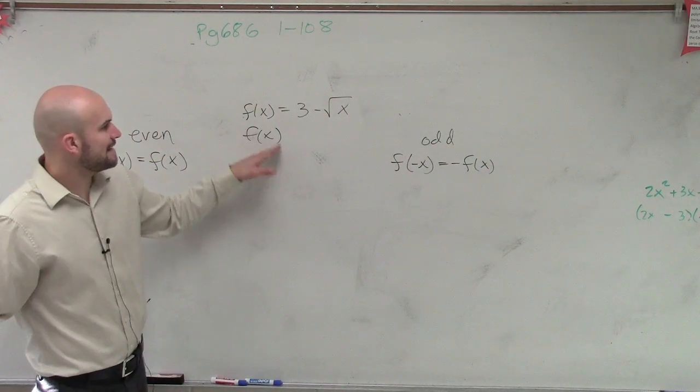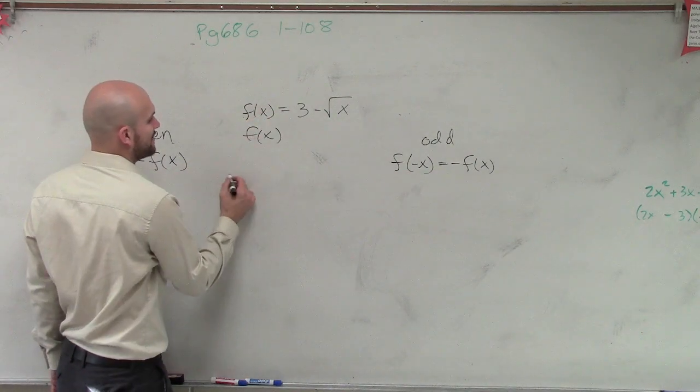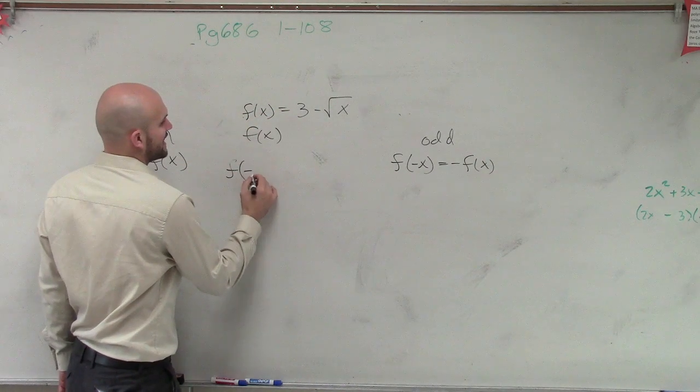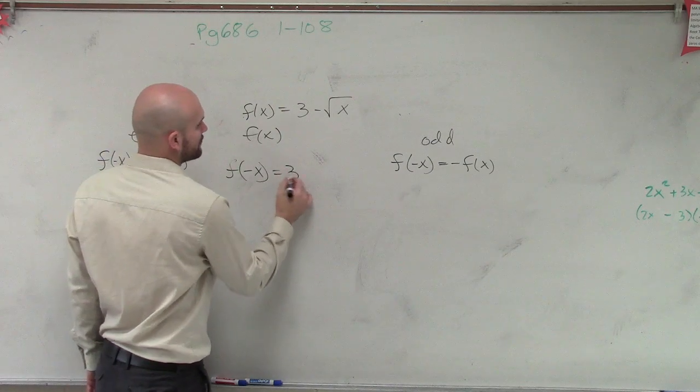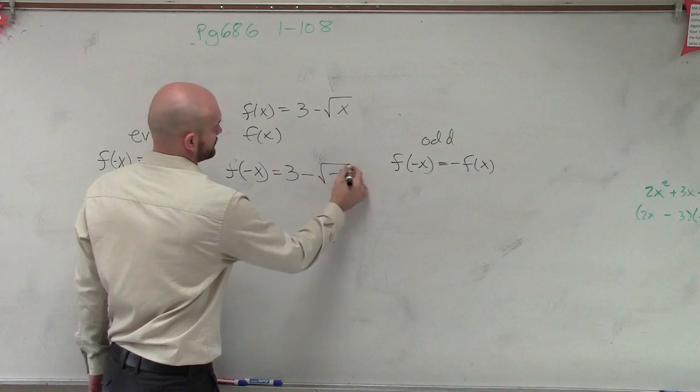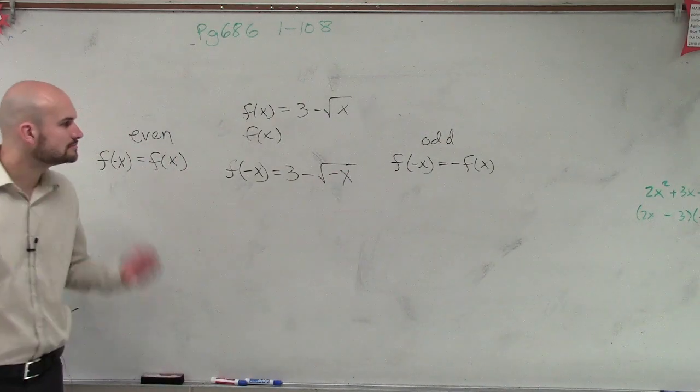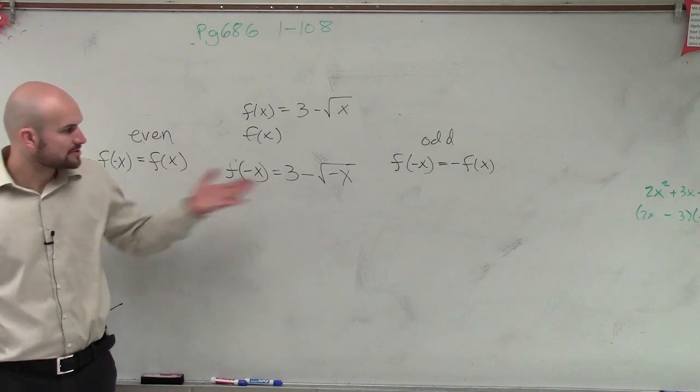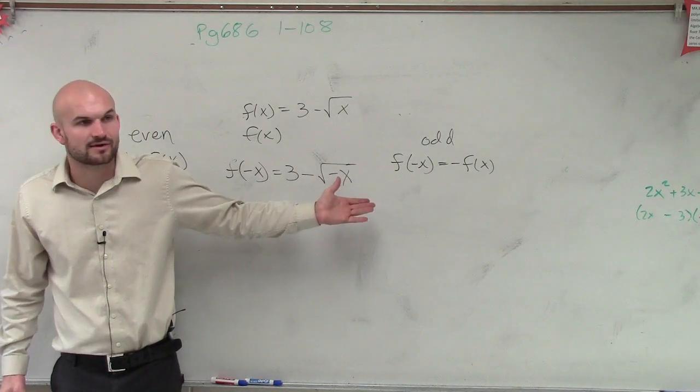So if I'm given f(x), which I am in this case, let's evaluate f(-x) = 3 - √(-x). Well, first of all, I can't evaluate for a negative x, right?